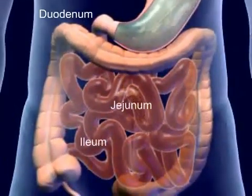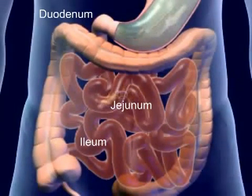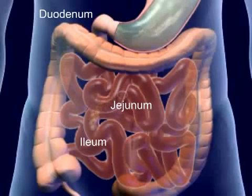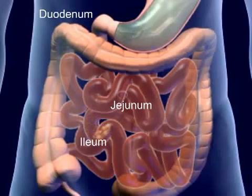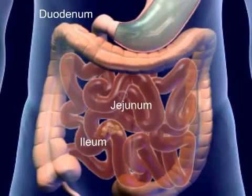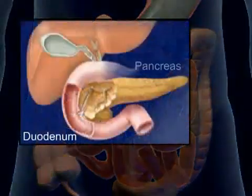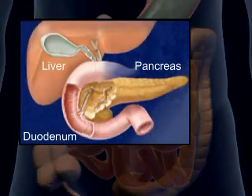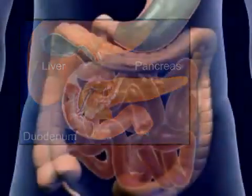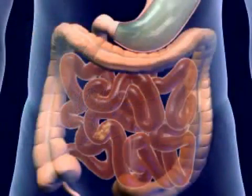The major portion of absorption and digestion occurs in the small intestine. The mucosa secrete enzymes that supplement the digestive enzymes of the pancreas and liver. This completes the chemical process of digestion.